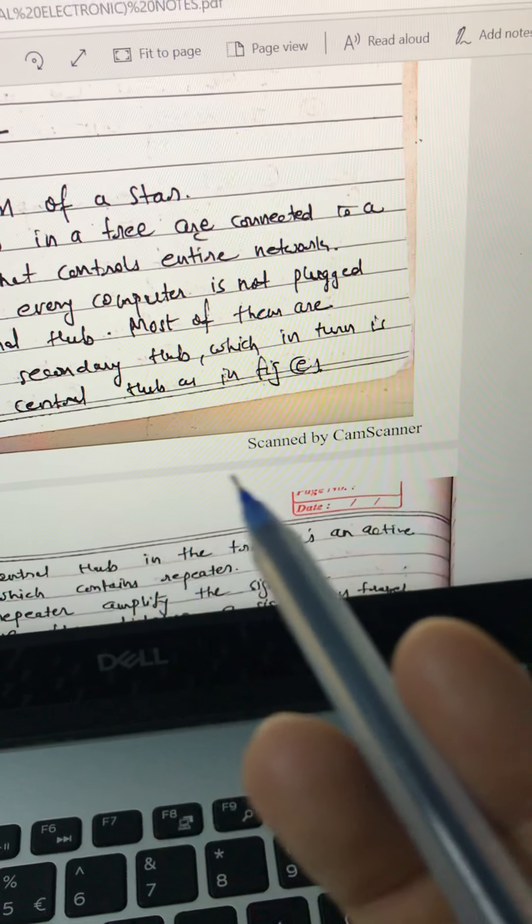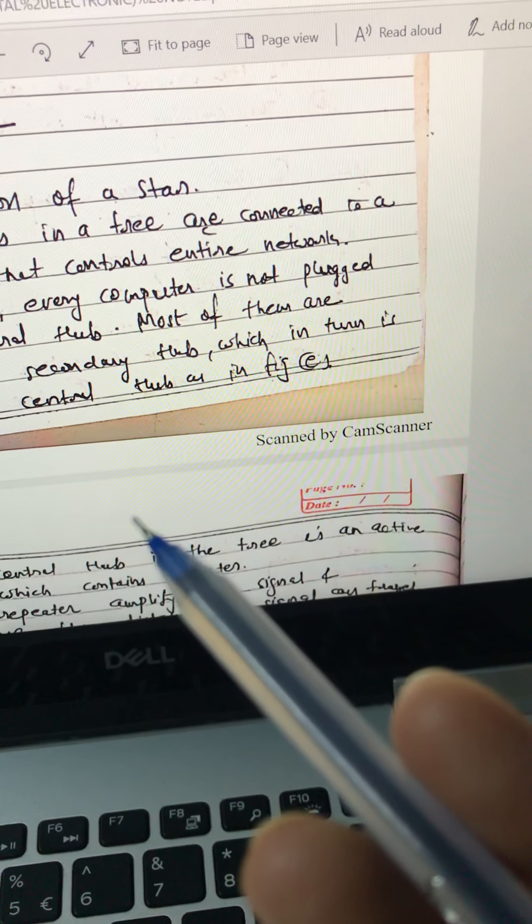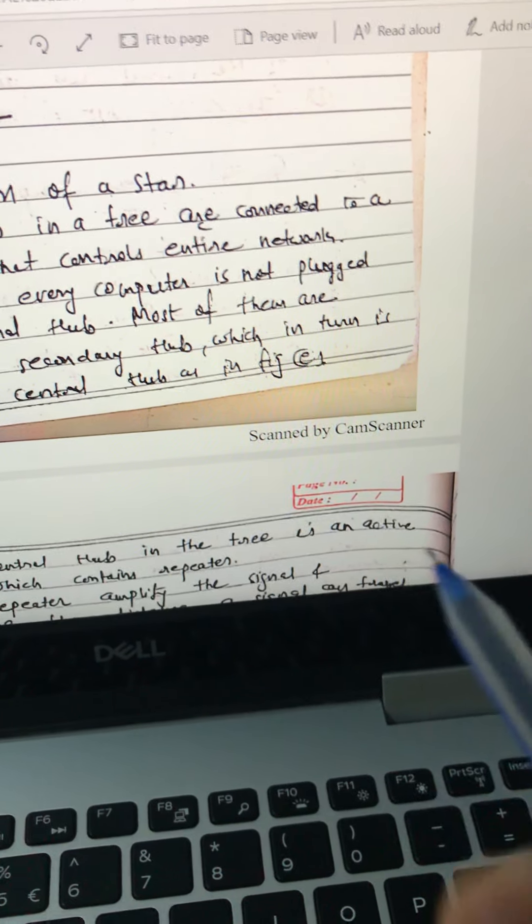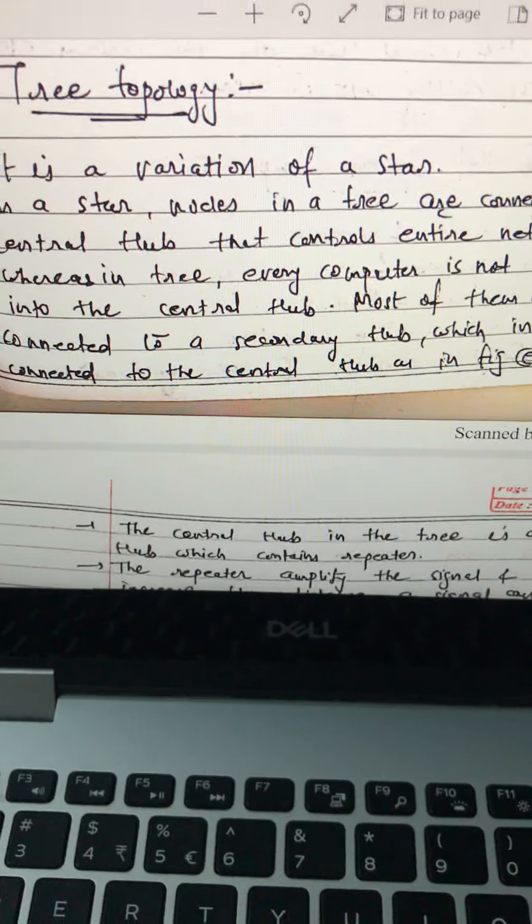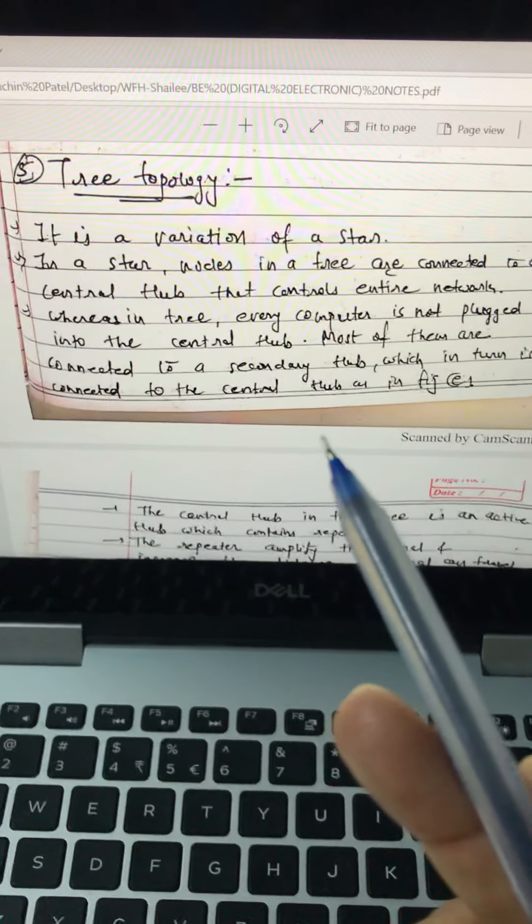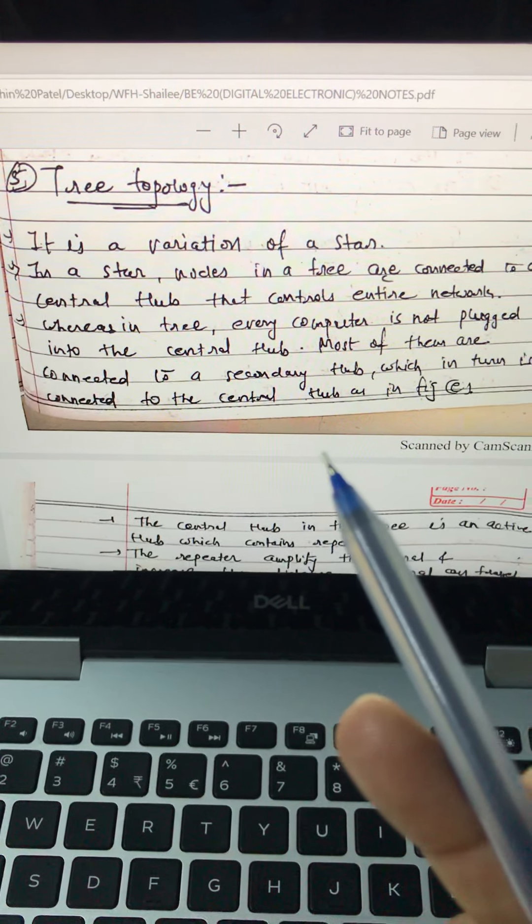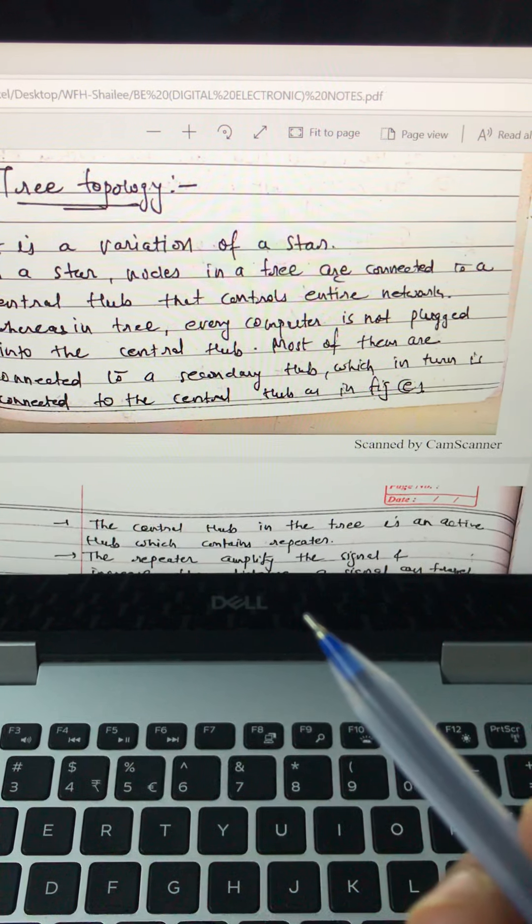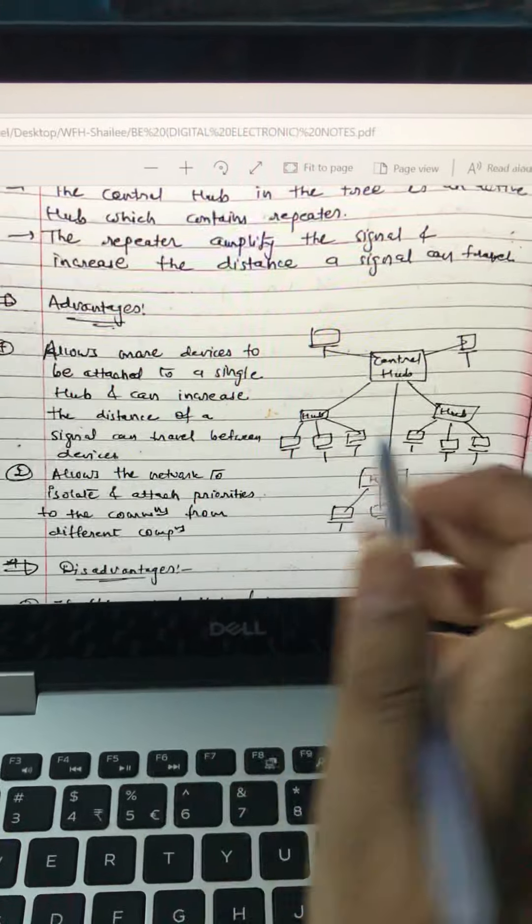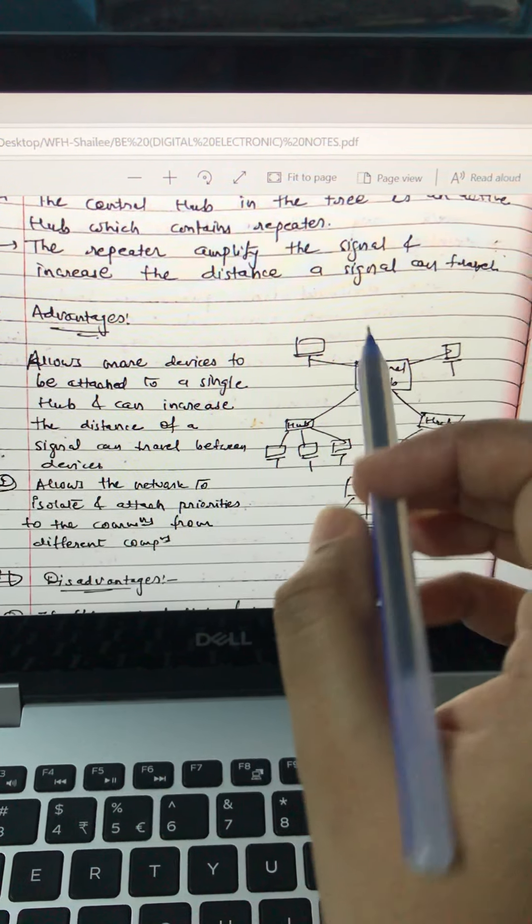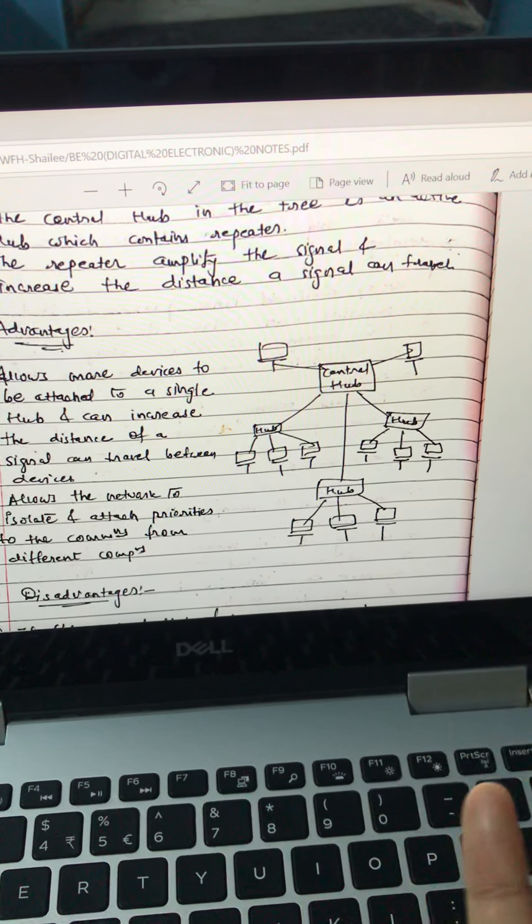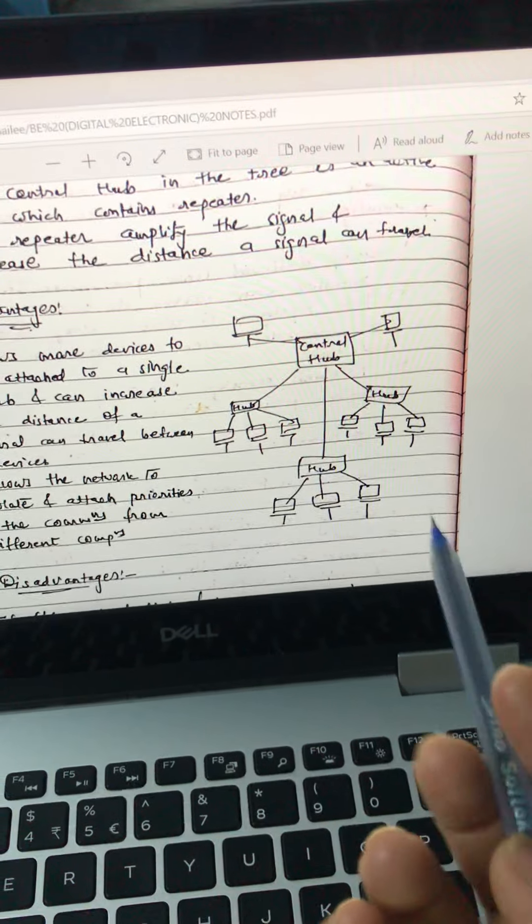Whereas in a tree, every computer is not plugged into the central hub. Most of them are connected to a secondary hub which is in turn connected to the central hub. Like this way, these are also hubs but connected to the central hub. So there are some repeaters used for a signal to increase the distance traveling. You can put repeaters there.